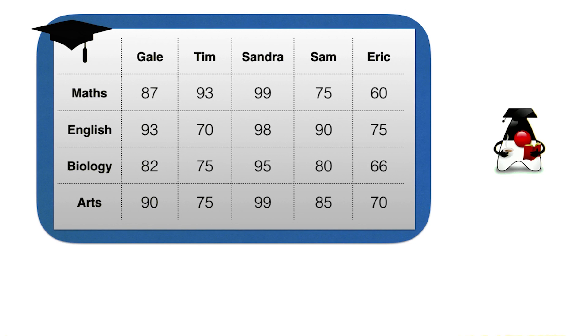We've seen earlier how to calculate the average of an array of doubles to get the average temperature, for example. Now, say we want to write some Java code that would perform basic grade analysis for a grade table like this.